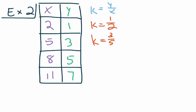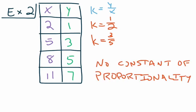So there's a difference between Example 1 and Example 2. Example 1 has a constant of proportionality; Example 2 does not. We can just stop — there's no equation to write. We simply say there is no constant of proportionality.